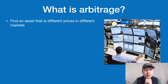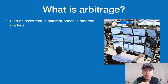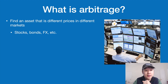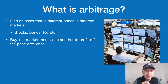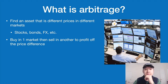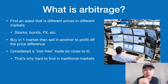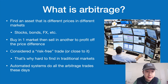So what is arbitrage at the highest level? You need to find an asset that has different prices in different markets even though it's the same asset. You can do this with stocks, bonds, Forex, and more. The idea is that you buy the asset in one market and sell it in another market where it's a different price, to profit off the difference. This is considered a risk-free trade, or pretty close to it.